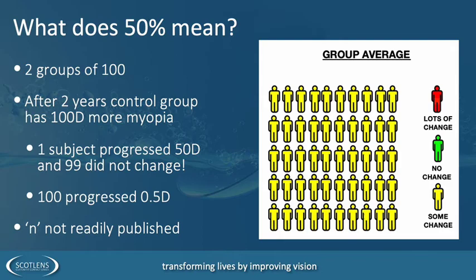Will we see this 50% happen? Looking at the Brian Holden Visual Institute data, if we look at Ortho-K for a patient who started at minus one, they're expected to progress to minus 2.43 dioptres. If we can slow that by 43% with Ortho-K, they'll only progress to minus 1.81 dioptres — a good amount but hard to necessarily measure in practice.